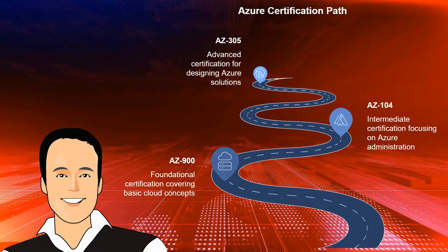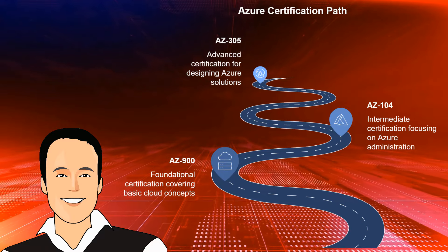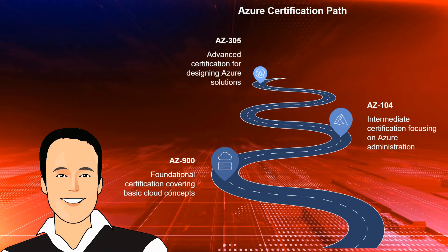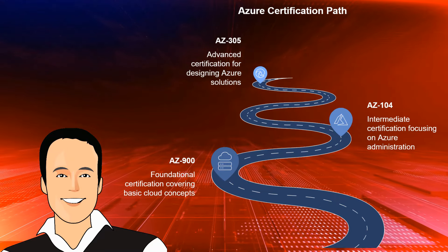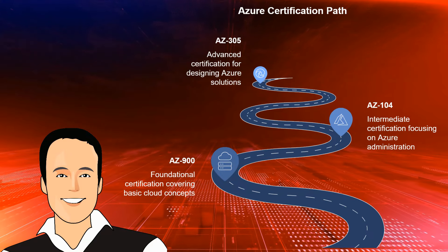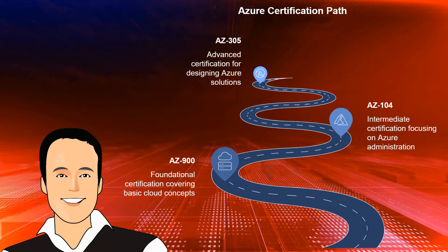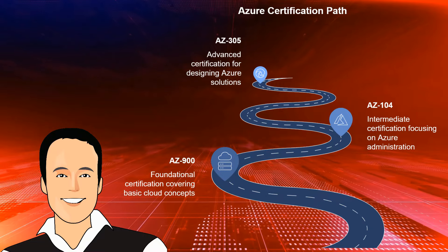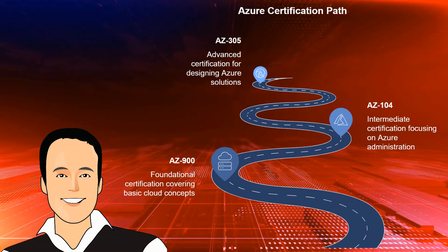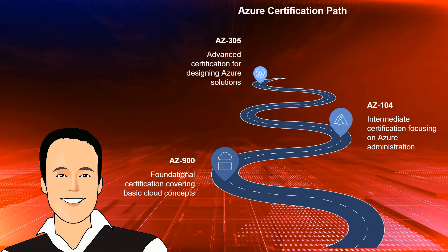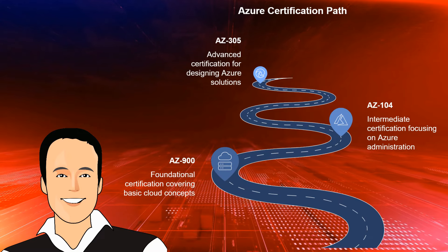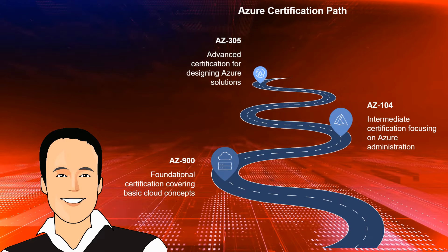To recap the Azure certification path from beginner to expert: you start with the AZ-900, the foundational certification covering basic cloud concepts; then move to the AZ-104, the intermediate-level certification focusing on Azure administration; and finally the AZ-305, the advanced certification for designing Azure solutions.